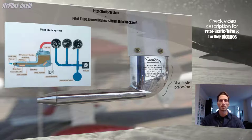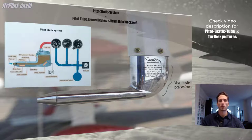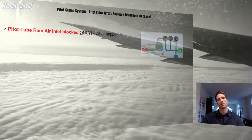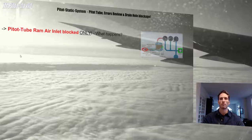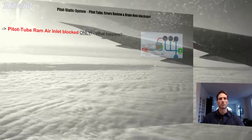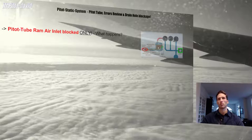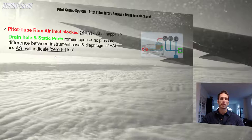Let's talk about the pitot static system errors. The first problem I'd like to review is what happens if the pitot tube Ram Air Inlet becomes blocked. As you can see on the picture, with the Ram Air Inlet blocked and the drain hole and static ports remaining open — the drain hole is located at a spot where it's only receiving ambient air pressure, the same pressure as the static ports. Since both the diaphragm and instrument case have equal pressure, the diaphragm won't expand or contract, so there's no needle movement and your indicated airspeed will remain at zero knots.